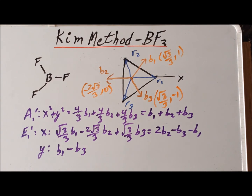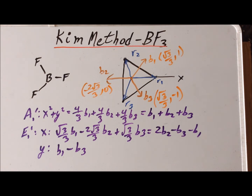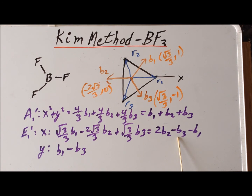Recall that we can interpret the coefficients of these functions as follows: if it's a positive value, we think of the bond or angle increasing; when the coefficient is negative, we think of it getting smaller. And when we have coefficients that are twice as big as another, this tells us that the change in bond angle is twice as large for that motion. Thank you very much for your attention. Have a good one.